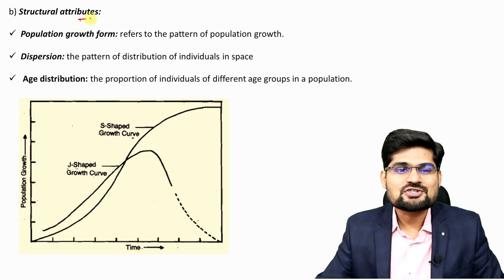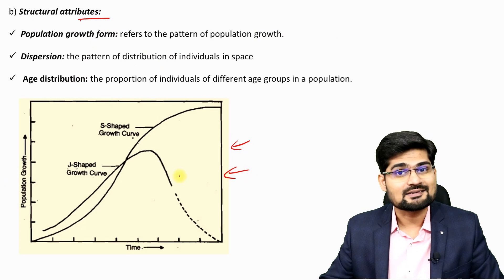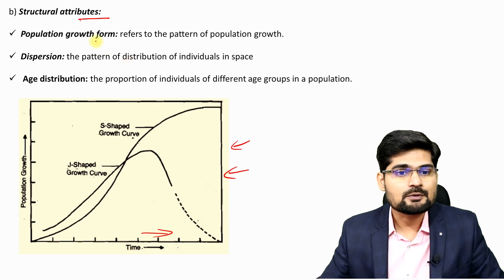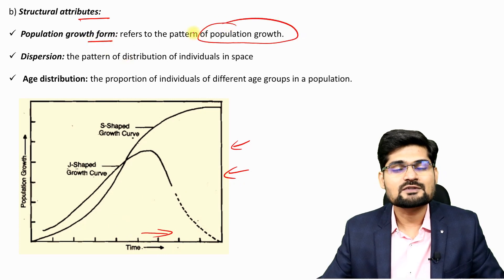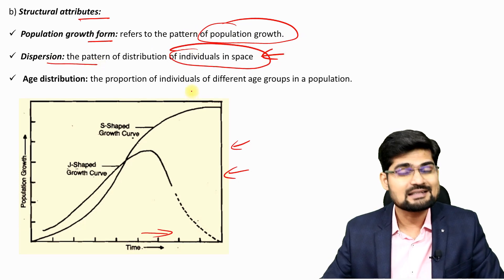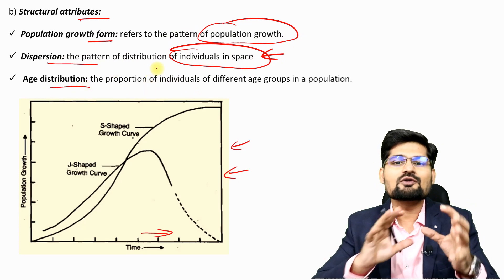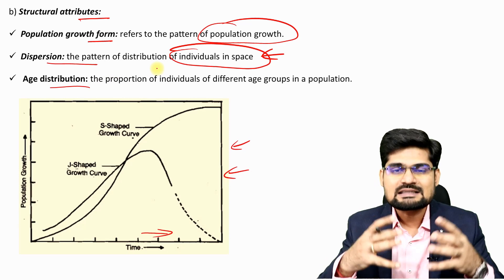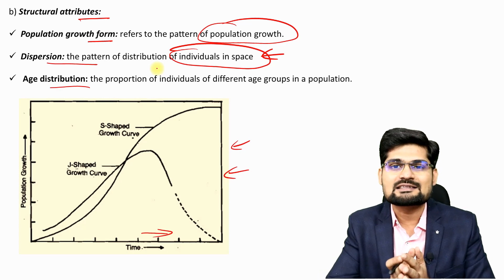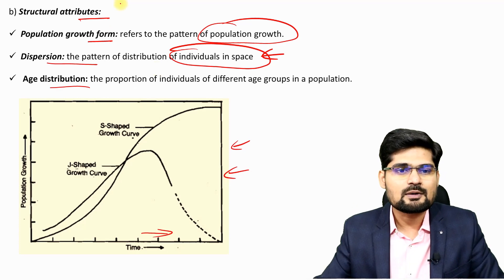The next one is structural attributes. If you look into a graph, you can understand it is talking about a pattern — a pattern with time and space connotation. That's where the geographical connotation comes into the picture. Population growth forms in terms of changes, growth and dispersal of individuals in space represent the spatial component, along with age and sex distribution and various other distributions discussed in previous sessions.